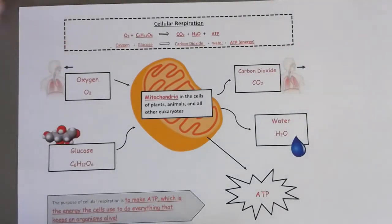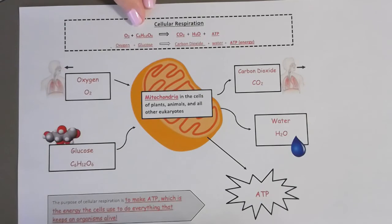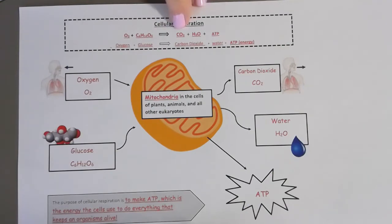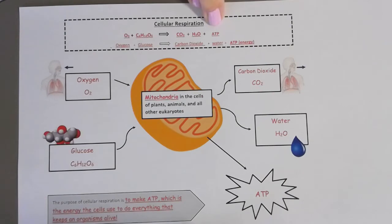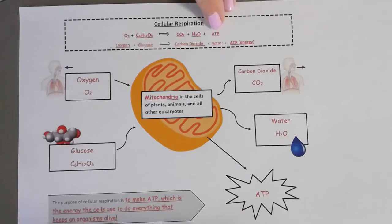This next process is called cellular respiration. Plants have produced oxygen and glucose. Now they break it down — this is a chemical reaction where atoms rearrange themselves into carbon dioxide, water, and ATP. ATP is energy. Remember how we discussed that in chemical reactions, energy can be absorbed or released — in this case, energy is released in the form of ATP.